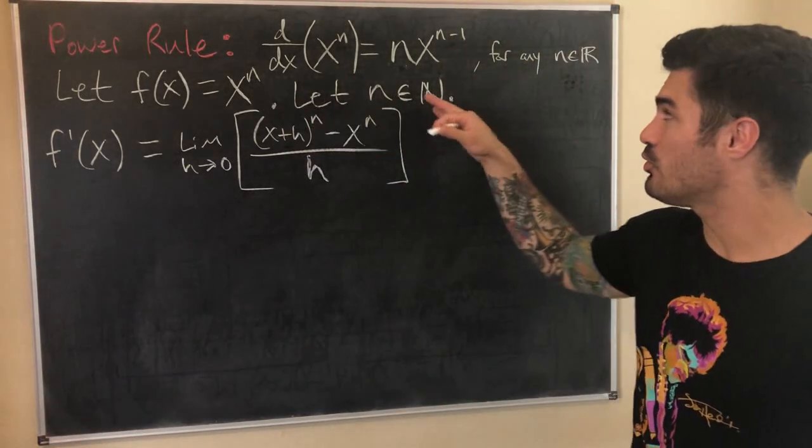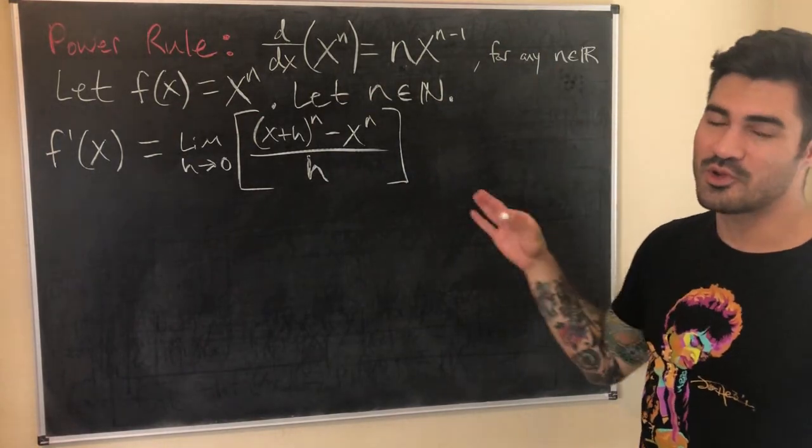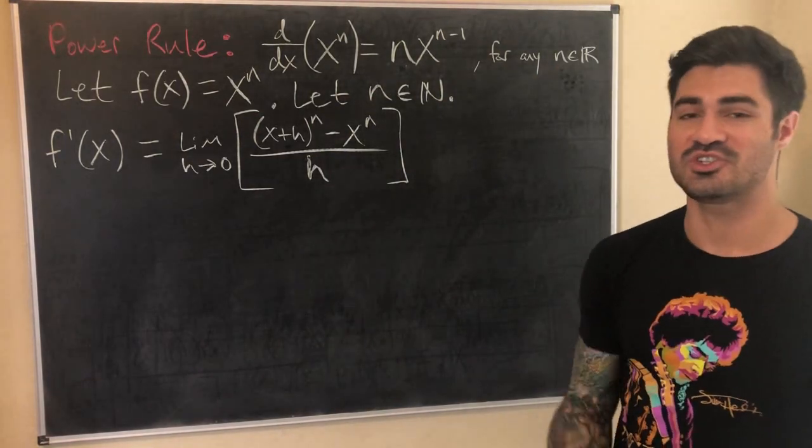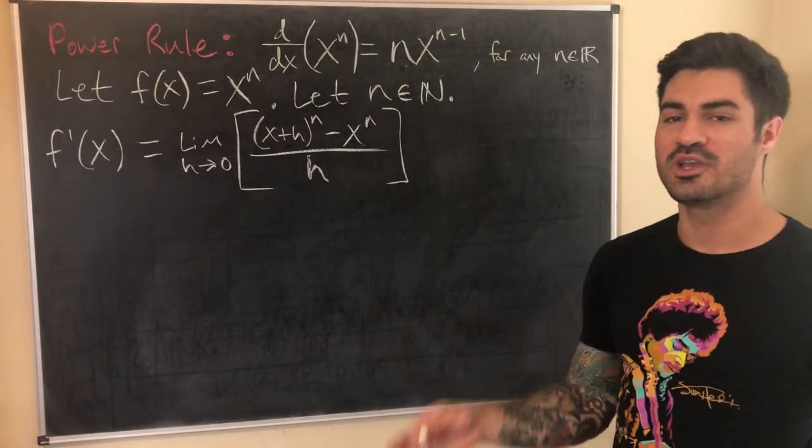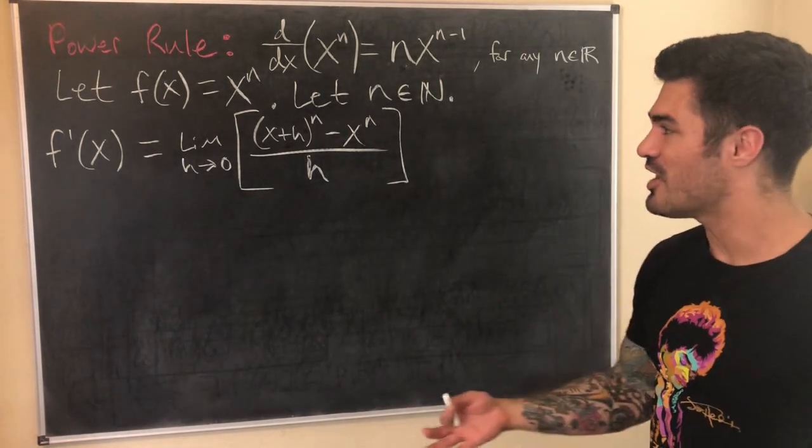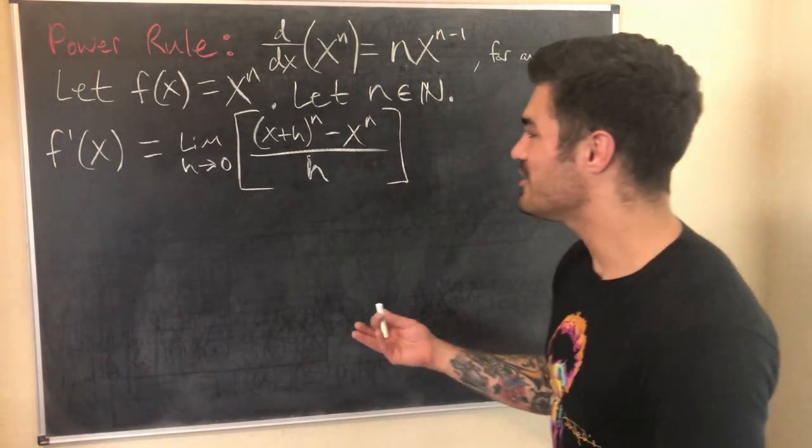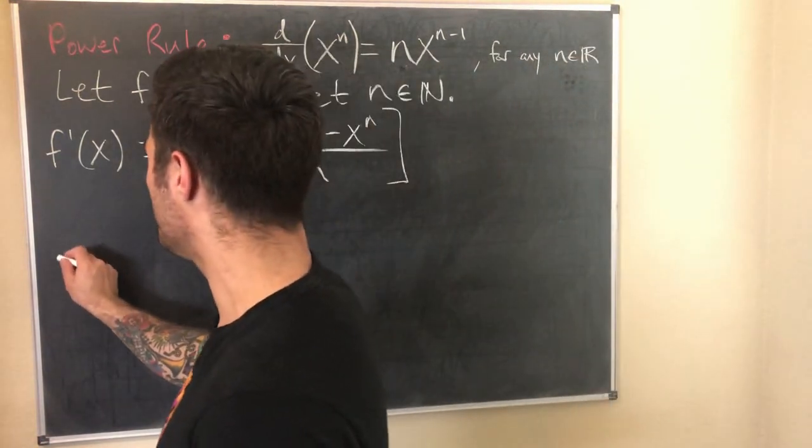We're going to let n be in the set of natural numbers. So this proof is going to prove the power rule, but not for any n in the real numbers, only in the natural numbers, which is still something. But then the second proof, we're going to prove it for all real numbers. It just requires a little more knowledge of calculus. So let's use the binomial theorem.